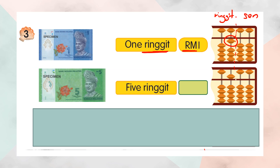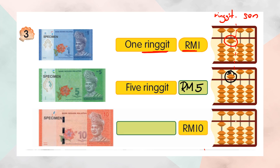And this one is five ringgit — five ringgit — so you have to put RM5. And for ten ringgit, you have to write RM10. This is one and this is zero, so RM10.